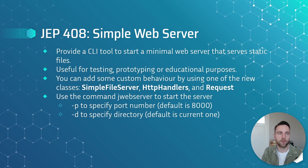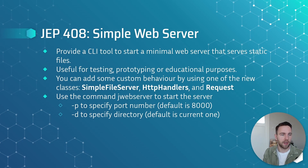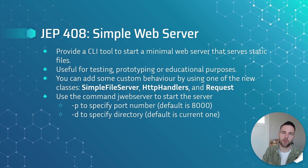The last JEP this release is JEP 408: a Simple Web Server. This JEP added a CLI tool to start a minimal web server that serves static files. This is useful for testing, prototyping, or educational purposes, and you can add some custom behavior to this web server by using one of the new classes: SimpleFileServer, HttpHandlers, and Request. To use the web server, you can use the command jwebserver to start the server, with optional flags like -p to specify the port number — the default is 8000 — and -d to specify the directory, with the default being the current one.